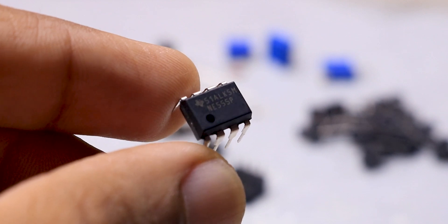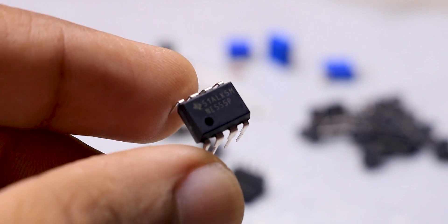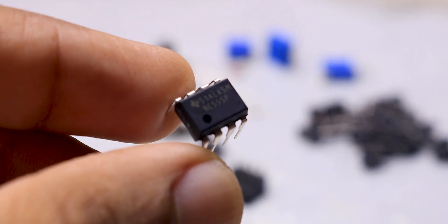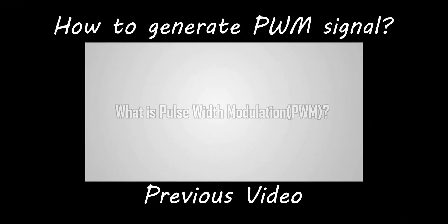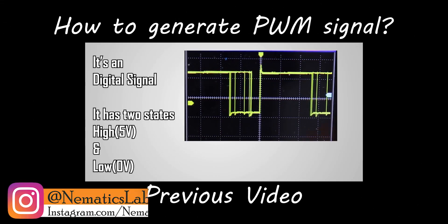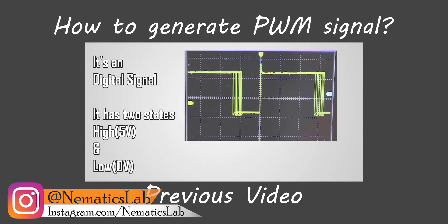The star of this project is this IC555 timer using which we will generate PWM signal of different frequencies. If you want to learn more about how to generate PWM signal, you should watch my previous tutorial on that.